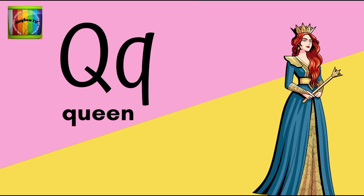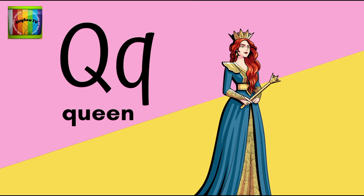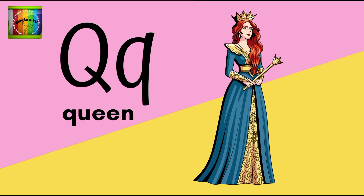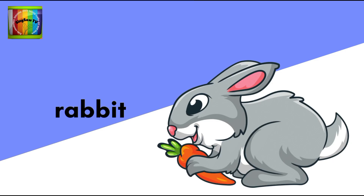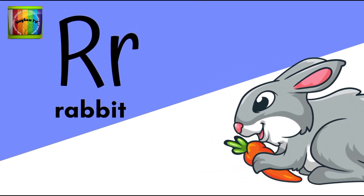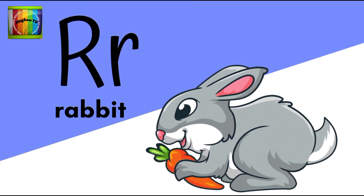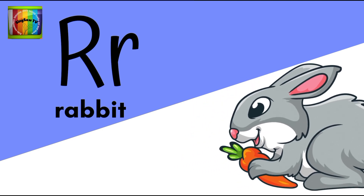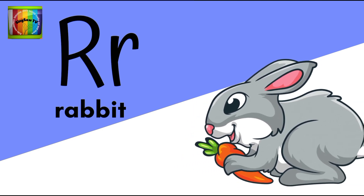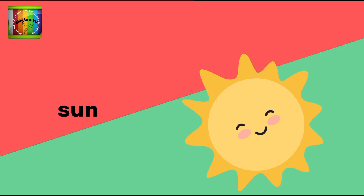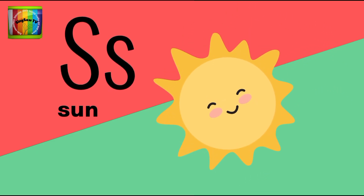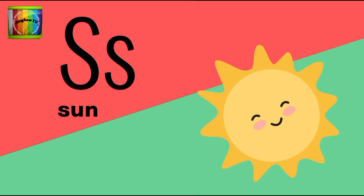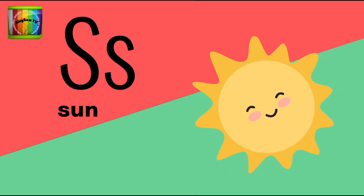Q is for queen. Q, queen. R is for rabbit. R, rabbit. S is for sun. S, sun.